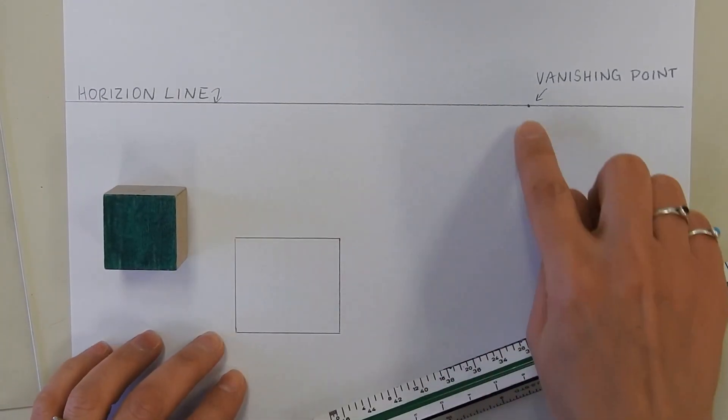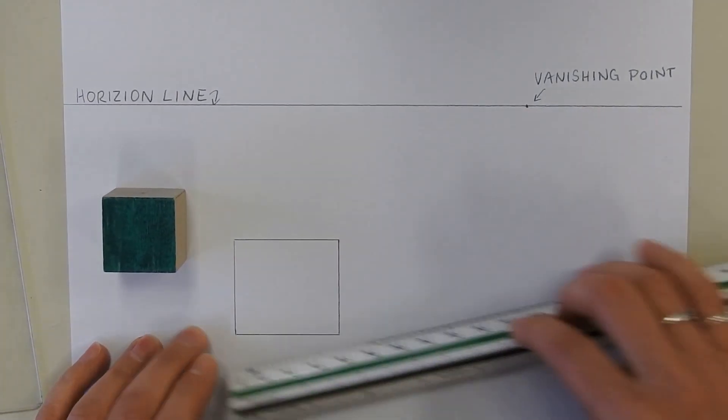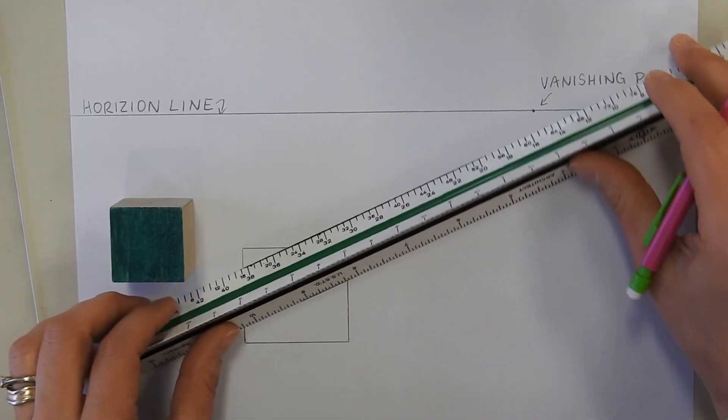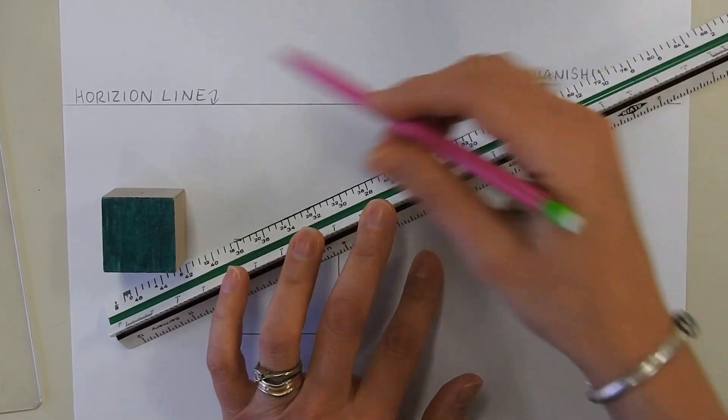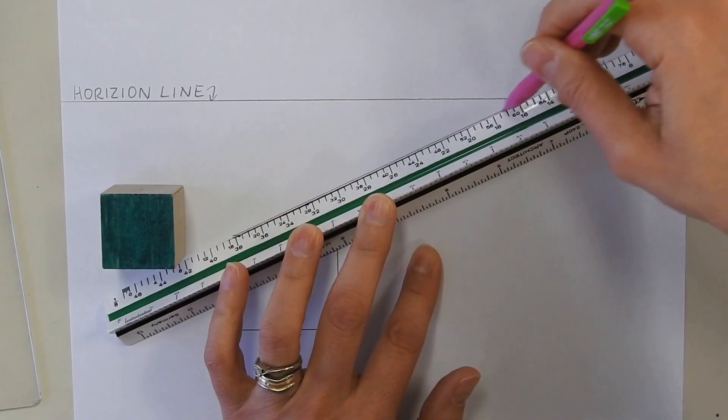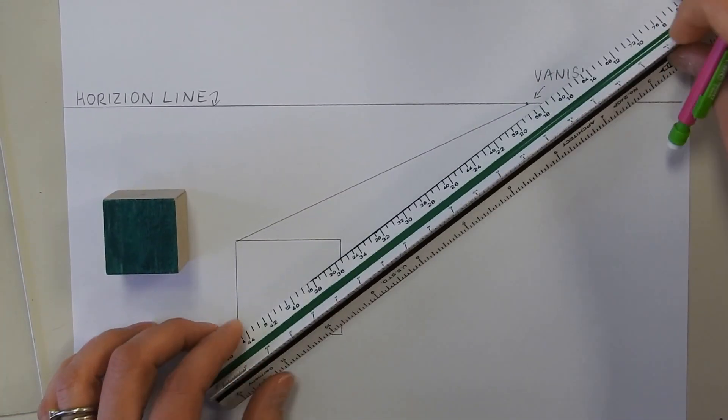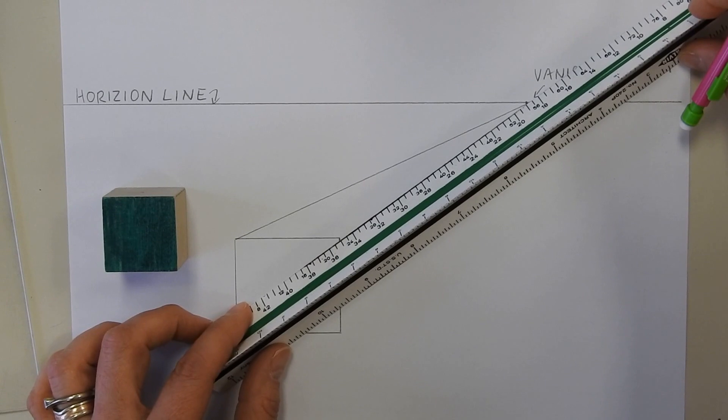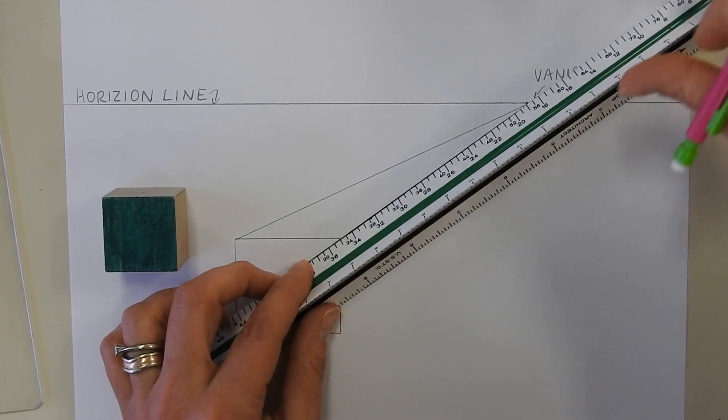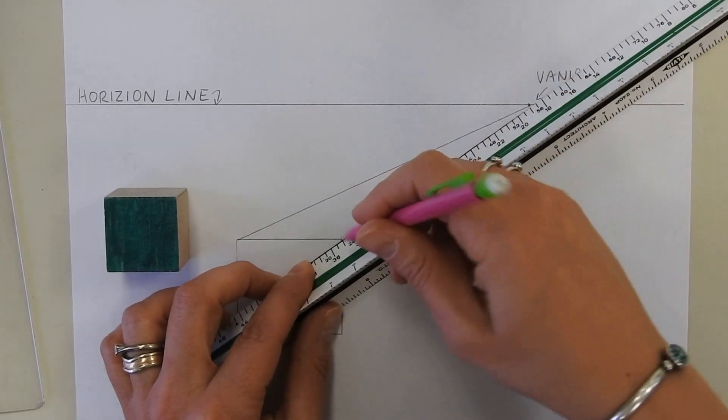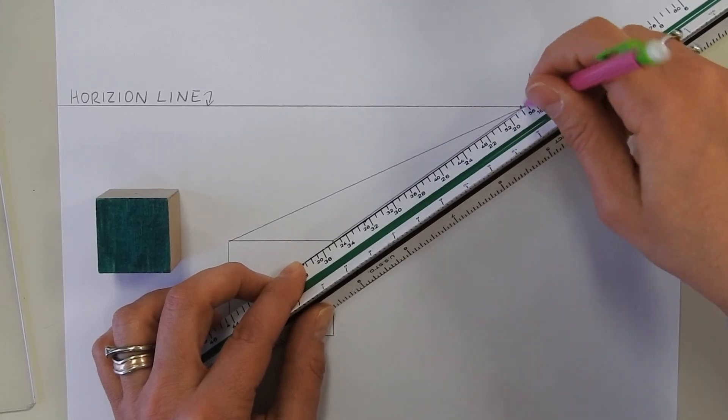Then we take these lines to the vanishing point, like this. Each edge of the cube goes back to that vanishing point to show that it's going off into the distance and give it depth.